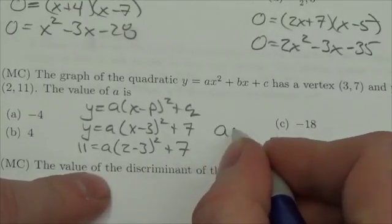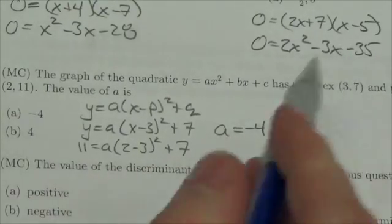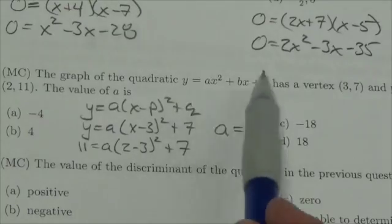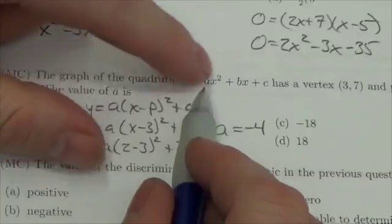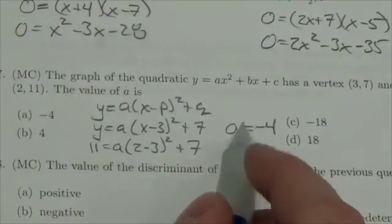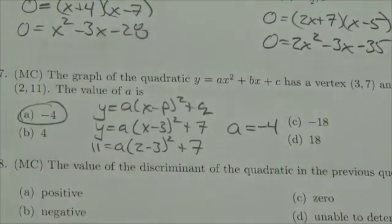11 minus 7, a is equal to negative 4. Now notice I don't need to expand this out because whether it's written in this form or in vertex form, the a value will be the same. So because I got a is equal to negative 4, the answer is (a) negative 4.